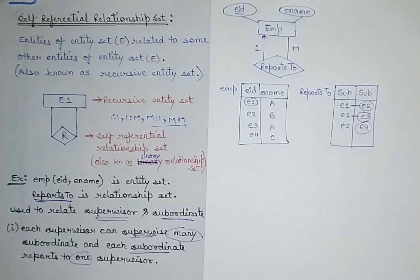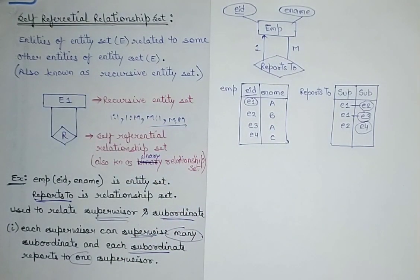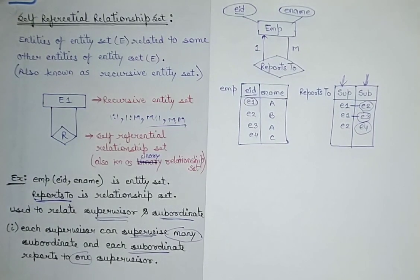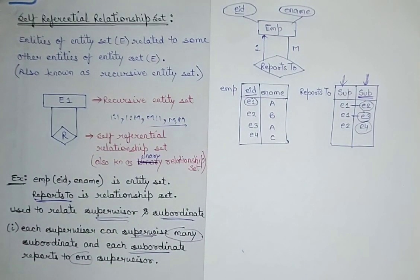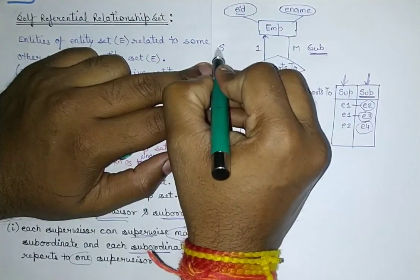If you observe one important thing: here E ID is the employee key because it has unique values and can uniquely identify the records. But for the supervisor column, it cannot uniquely identify the records because there are repeated values — it is not unique. However, the subordinate column has unique values with no redundancy. So the subordinate attribute will behave as a key for the 'reports to' relationship. The key always belongs to the side without redundancy.